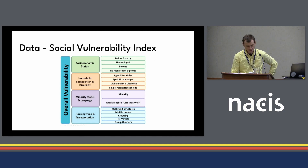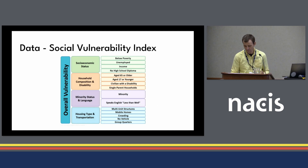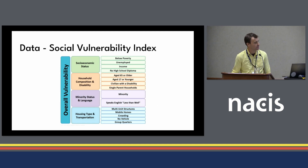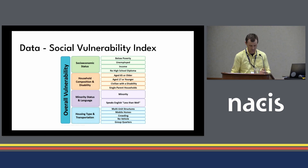The graphic on this page outlines the four vulnerability themes that I worked with. They include socioeconomic status, housing composition and disability, minority status and language, housing type and transportation, and then, as you can see on the left, overall vulnerability.